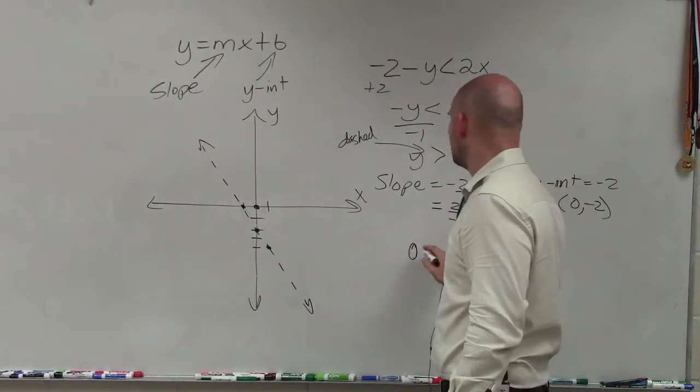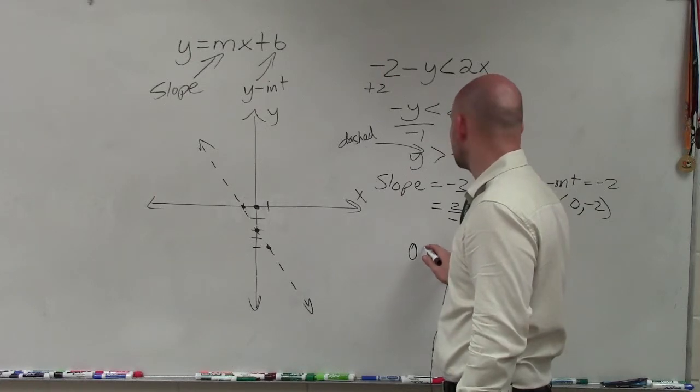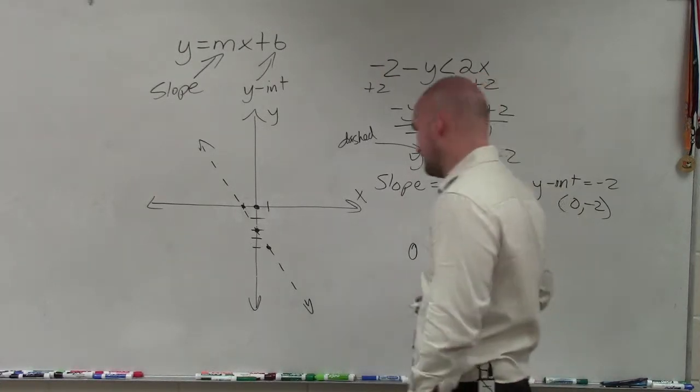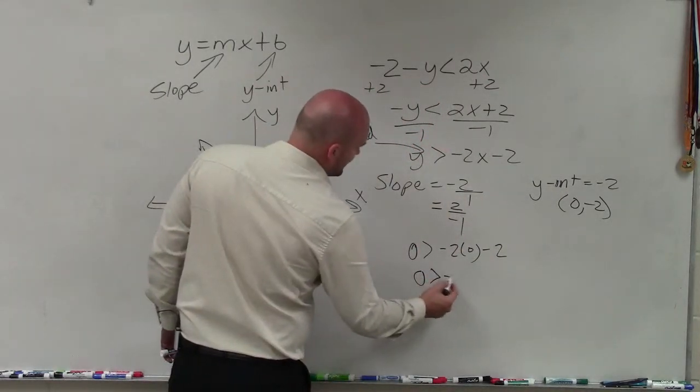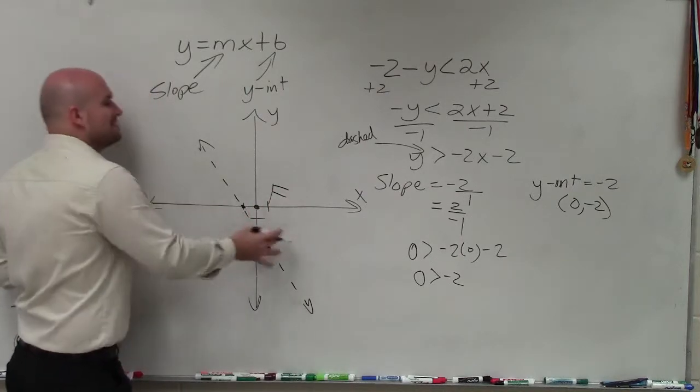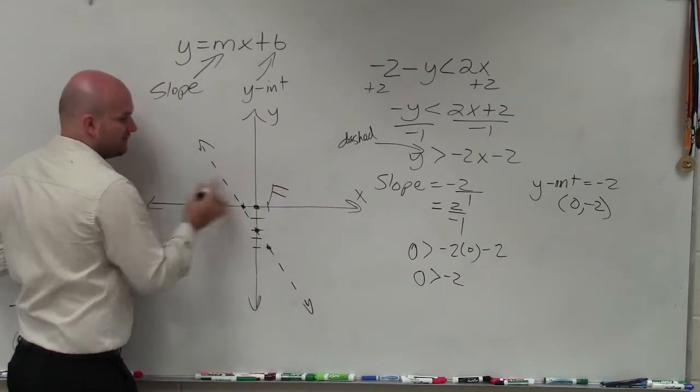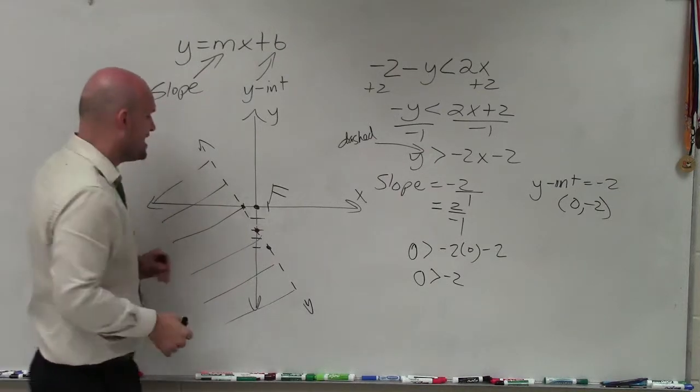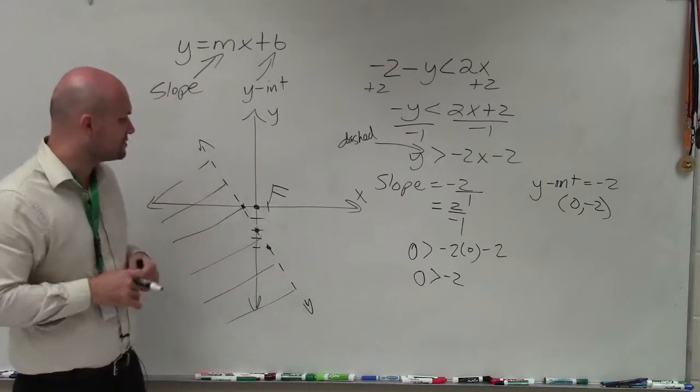So to test it, I simply plug in 0 for x and 0 for y. And what I notice is I have 0 is greater than negative 2. Well, 0 is not greater than negative 2. That means it's false. That means any point that's above this line will be false, and all points below are going to be true. So I shade with these lines to represent those points being true.